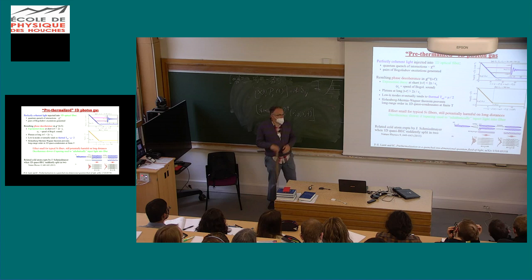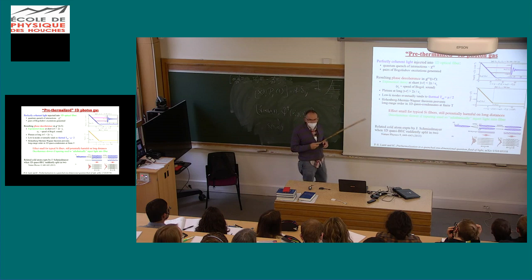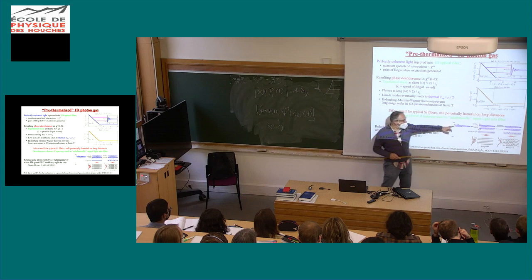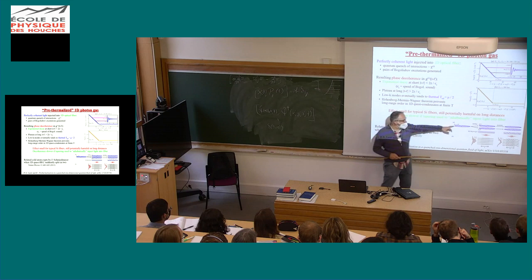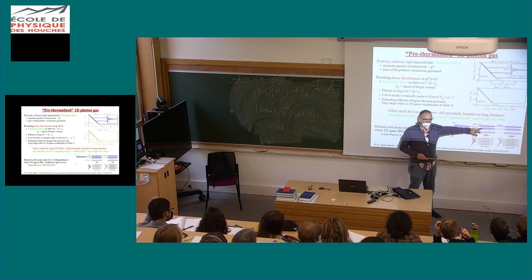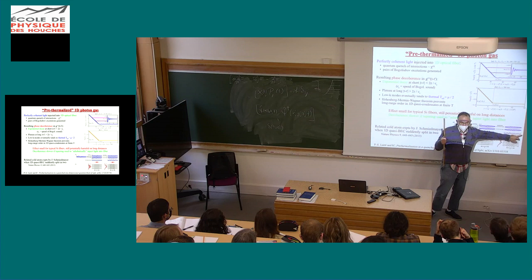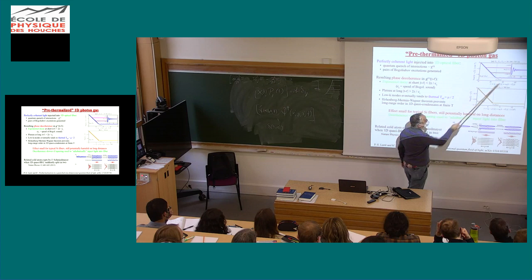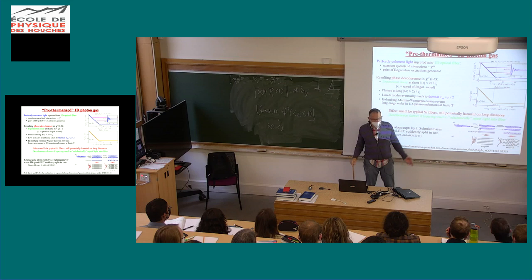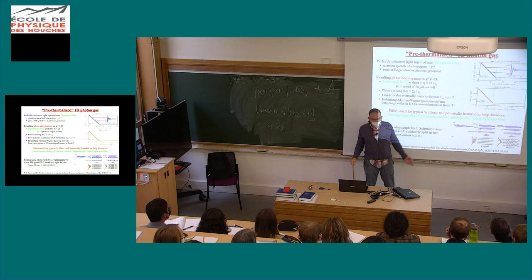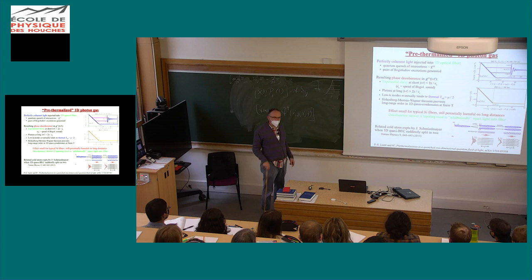So after sufficiently long propagation, the field will have lost its coherence, as it would happen for an atomic condensate created in a perfectly coherent state and then let evolve. This is because quantum fluctuations in the intensity create quantum fluctuations in the refractive index, which dephase different parts of the field in different random ways. The T-Z mapping allows us to understand this physics in a completely straightforward way without doing a single calculation. The physics of propagating light through a single-mode fiber is very similar to what Jörg Schmiedmayer did with one-dimensional condensates.